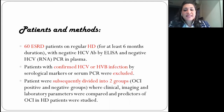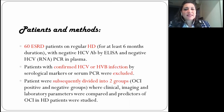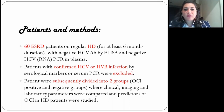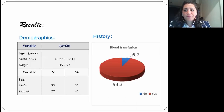60 patients atteints d'insuffisance rénale en phase terminale sous hémodialyse d'entretien régulier ont été étudiés. Tous avaient un ARN du virus de l'hépatite C négatif et un anticorps du virus de l'hépatite C négatif par ELISA. Les patients avec une hépatite C confirmée ont été exclus de l'étude. Nous avons effectué une PCR de l'ARN de l'hépatite C dans les cellules mononucléaires sanguines de ces patients. Les patients ont ensuite été divisés en deux groupes, positifs et négatifs pour l'infection occulte à l'hépatite C, et les paramètres cliniques, d'imagerie et de laboratoire ont été étudiés dans les deux groupes.